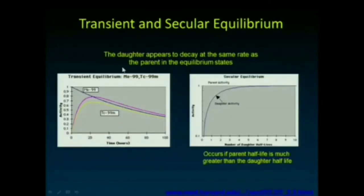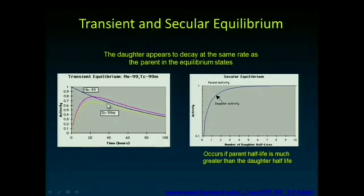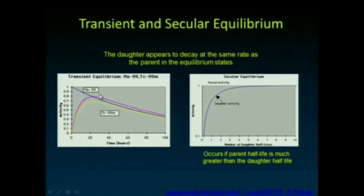One thing that's nice about the generator is that if you start with no technetium and just molybdenum, after about a 24-hour period you reach a peak in the amount of technetium available. You can elute all the technetium, then let the next 24-hour period build it back up as the molybdenum continues to decay. The ratio of half-lives between molybdenum and technetium results in a transient equilibrium that peaks right around 24 hours — very convenient for eluting the generator each morning and starting the day's imaging.